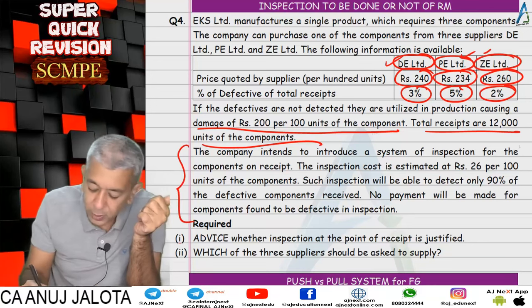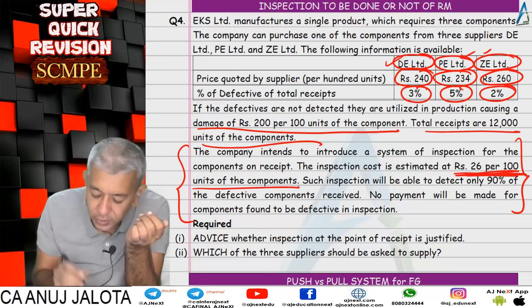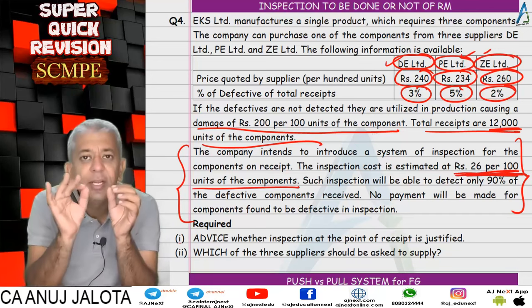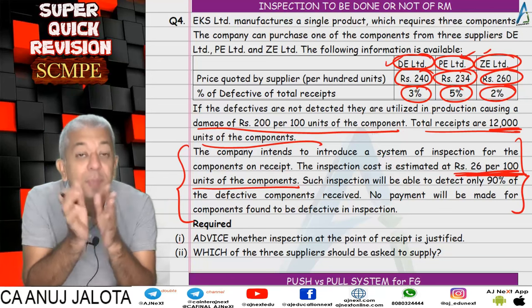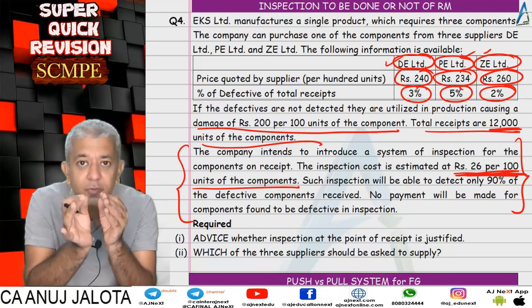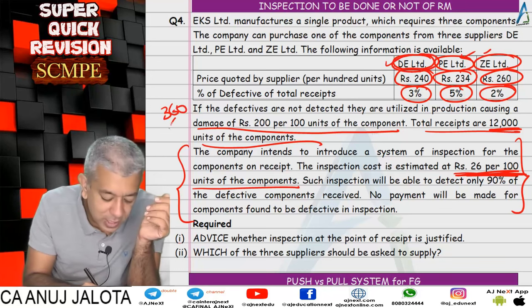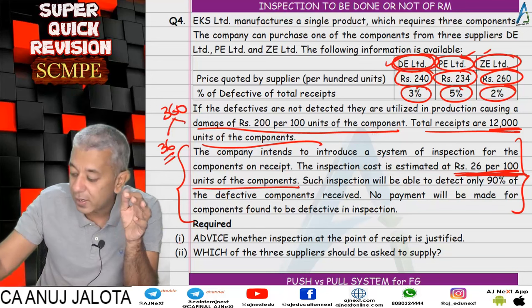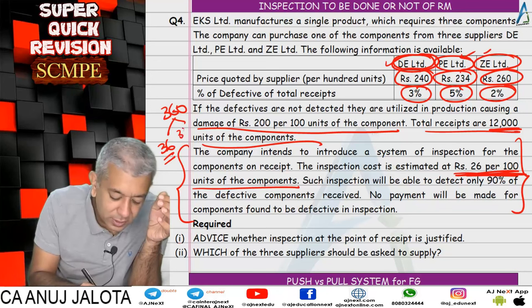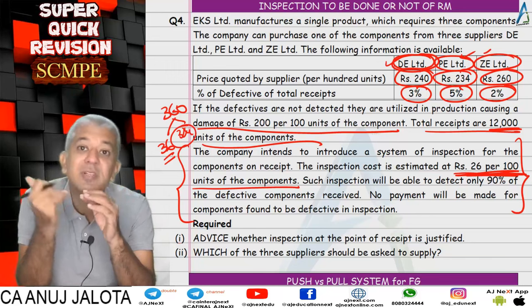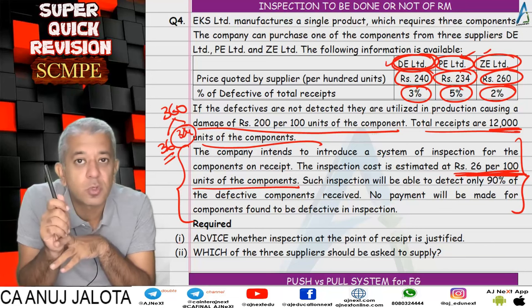There is a proposal to do inspection. The inspection cost will be 0.26 per unit — so 12,000 × 0.26. Due to this inspection, 90 percent of defective units will get detected. For supplier D, defective units were 360; 90 percent of 360 = 324 will be detected and sent back to the supplier with no payment made for those.